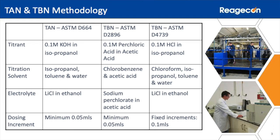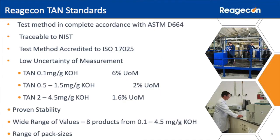The pH buffers are used for checking the electrode performance on the autotitrator. In terms of method D664, the standards are traceable to NIST. The test method is accredited, and the method has a very low uncertainty in measurement which is linked to the TAN value and is expressed as a percentage of that value.